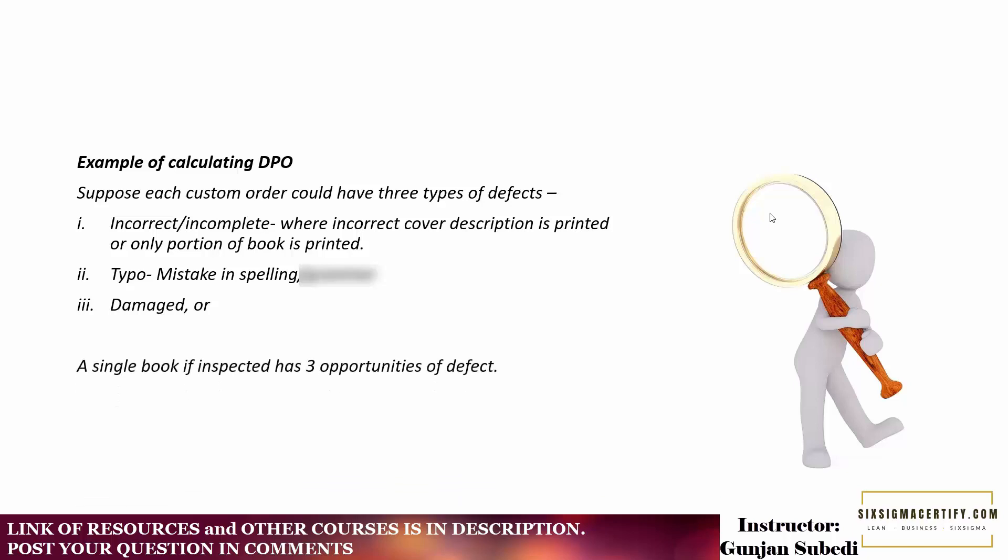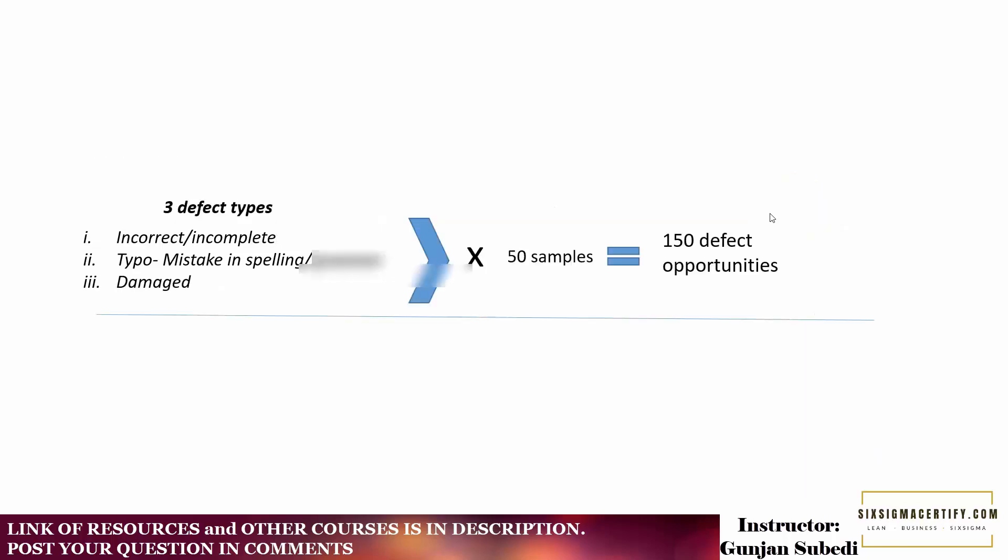So let's suppose there could be three types of defect opportunities. A single book if inspected has three opportunities of defect. If we sample 50 books, there could be 150 defect opportunities.